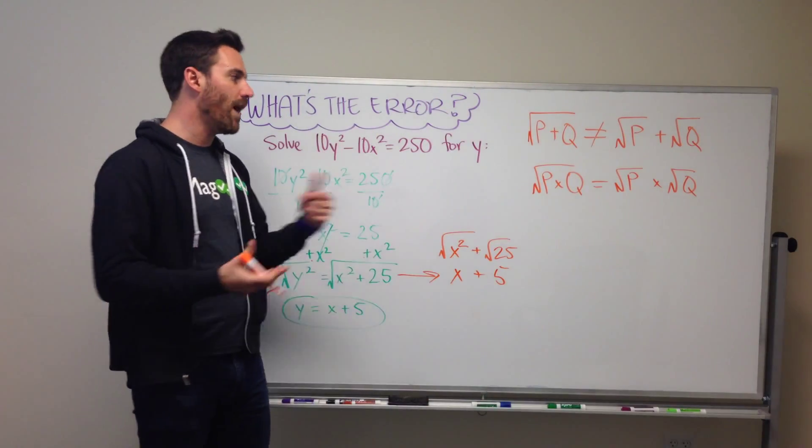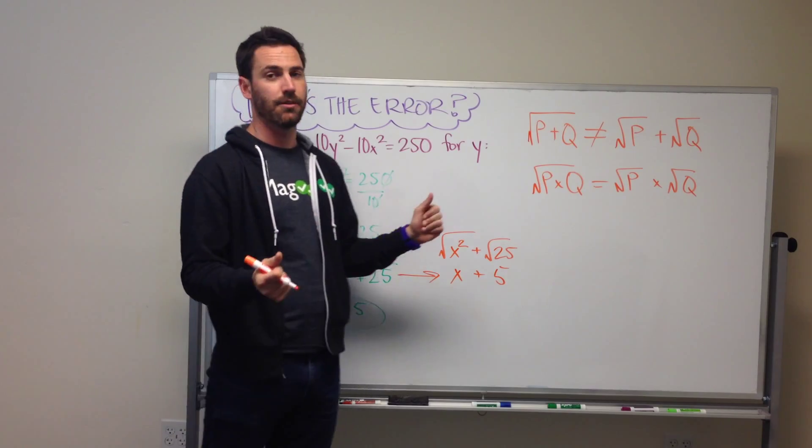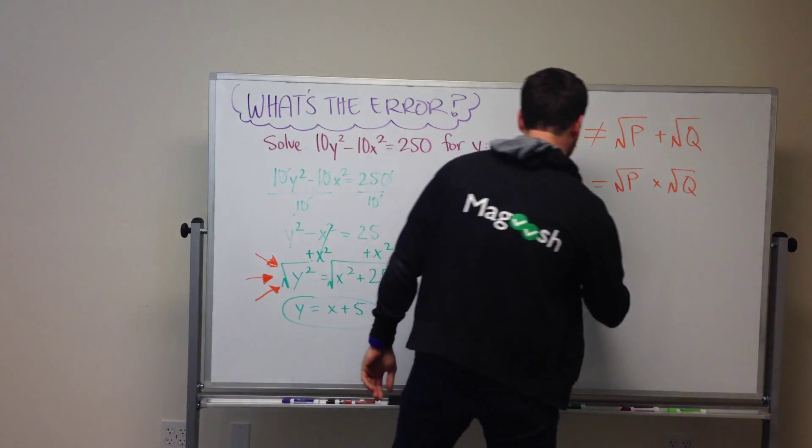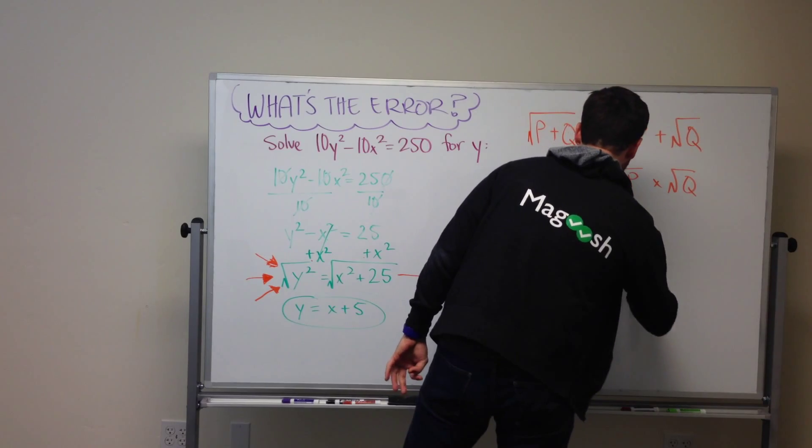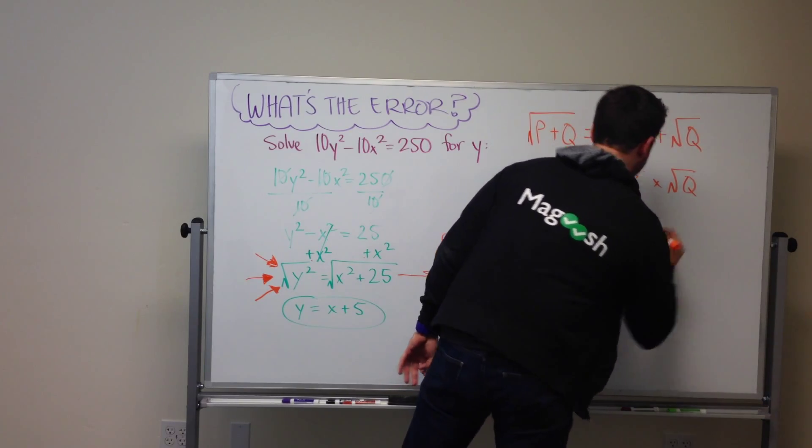And there's a really good way to remember this. If we think about the Pythagorean theorem. Pythagorean theorem is a² + b² = c².